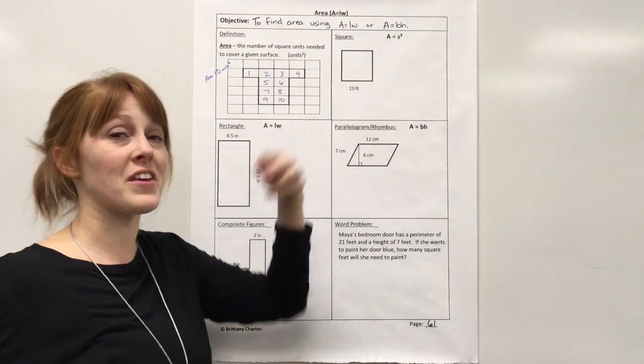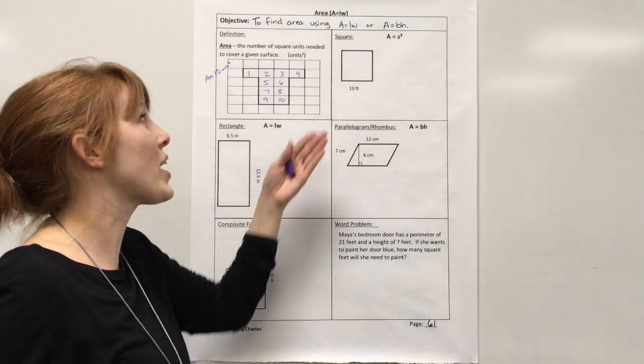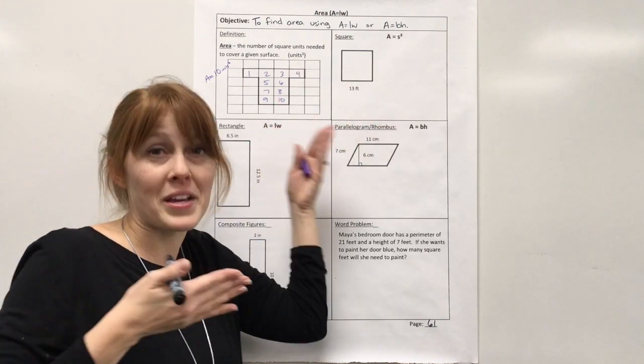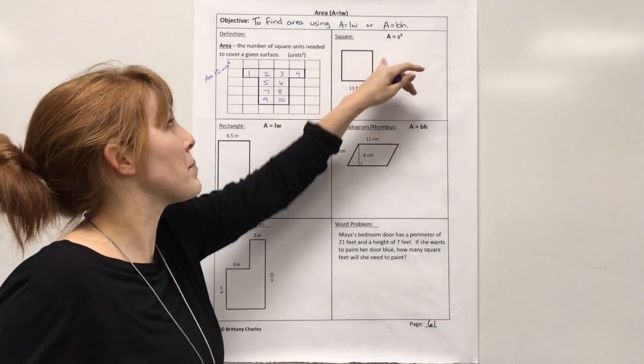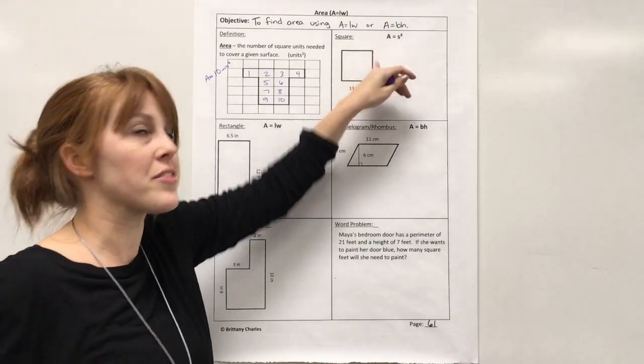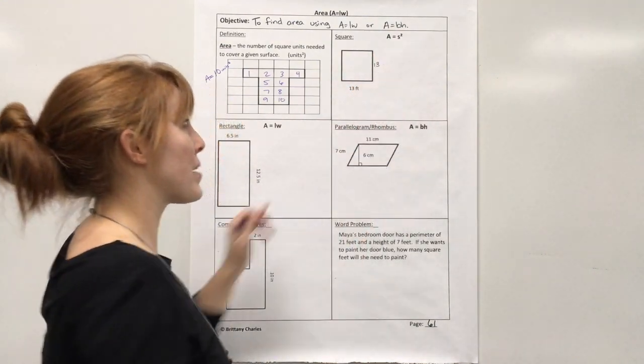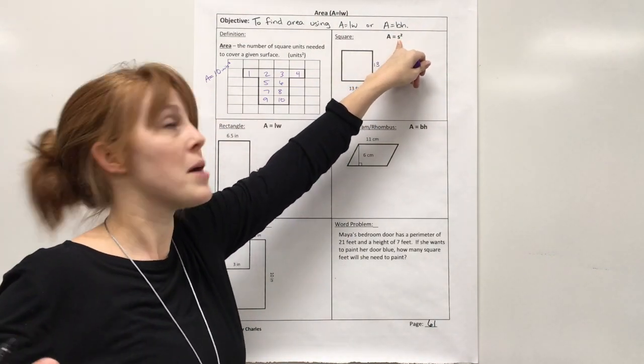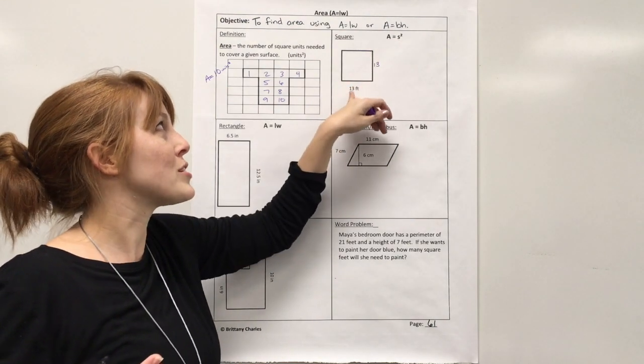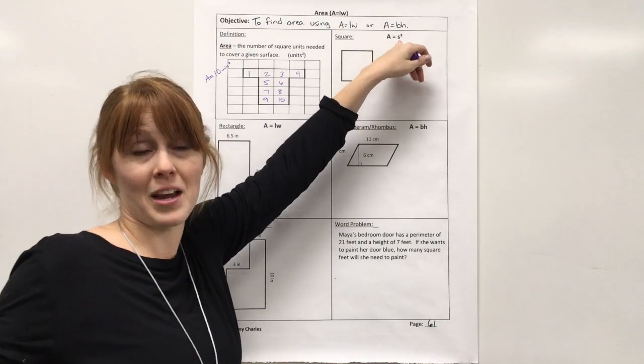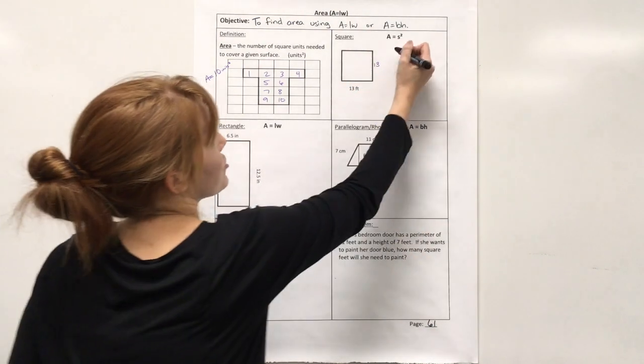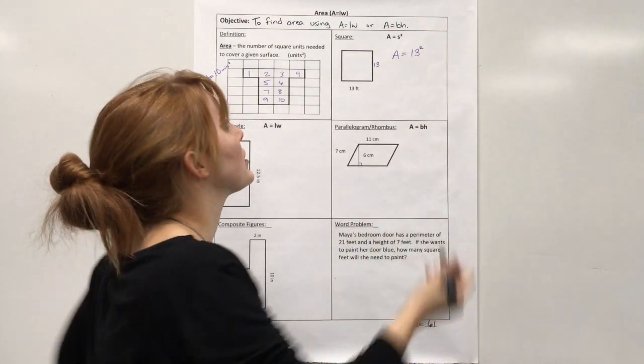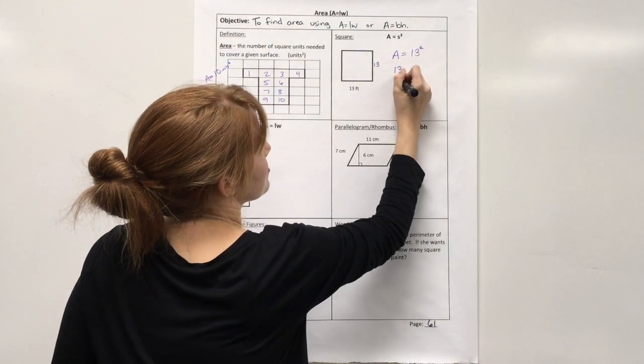So looking here, when I find the area of a square, what I can do is, because a square has all sides the same, the length and the width, or the base and the height, are the same number. So I can do length times width, and just label this 13. But I can also use this formula, which is one side to the second power, because both sides are the same number. 13 times 13 would be the same thing as 13 to the second power. So area equals 13 to the second power, or 13 times 13. So then I'm going to solve that.